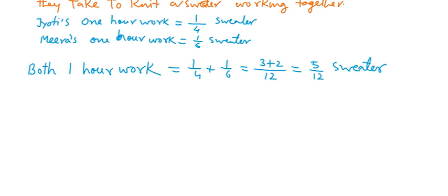If they start to knit in a combined form, means together, then their one hour work will equal to 5 by 12 sweaters. Now we have to find number of hours to knit a sweater together.